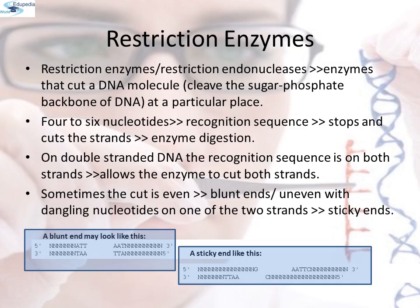Restriction enzymes, also known as restriction endonucleases, are enzymes that cut a DNA molecule or cleave the sugar-phosphate backbone of the DNA at a particular place. The enzyme scans a DNA molecule looking for a particular sequence, usually of 4 to 6 nucleotides. Once it finds these recognition sequences, it stops and cuts the strand — this is known as enzyme digestion. This allows the enzyme to cut both strands. Sometimes the cut is blunt; sometimes the cut is uneven with dangling nucleotides on one of the two strands. This uneven cut is known as sticky ends.